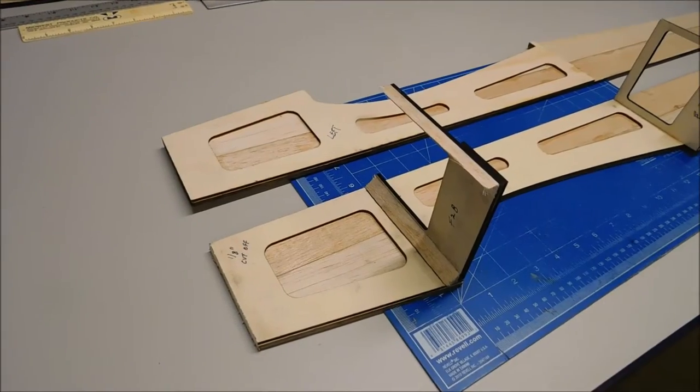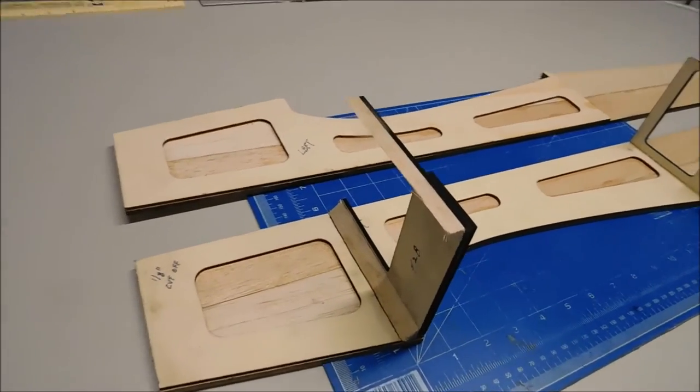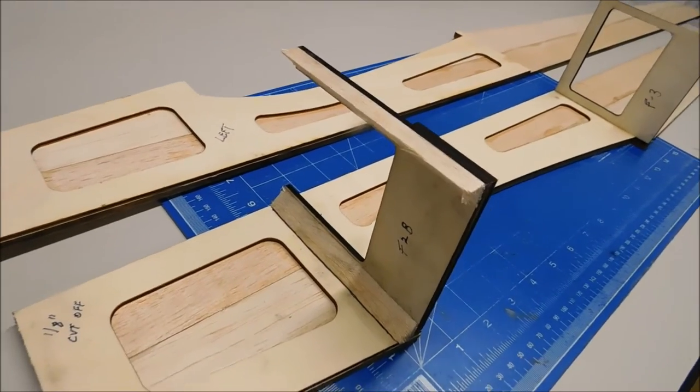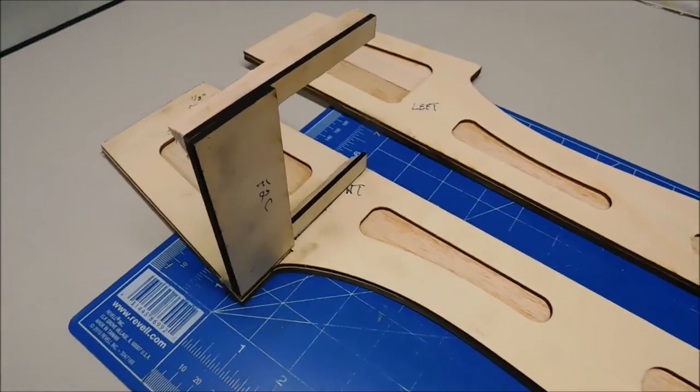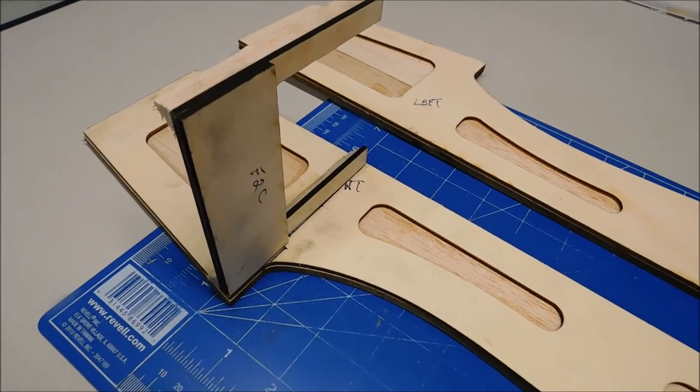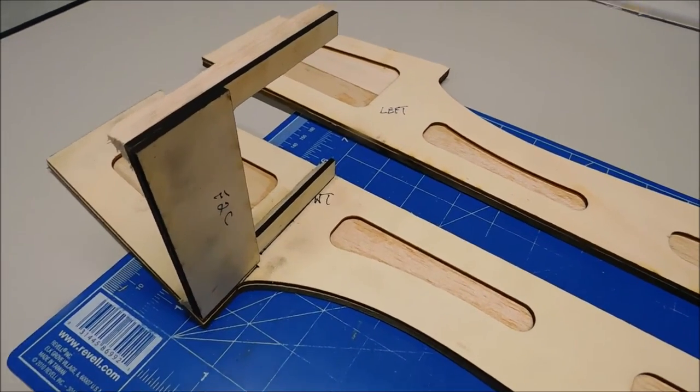I also have started framing up the fuselage. I've got the F2 former with the triangle stock already glued in place, with the additional dowel plate there for the wing dowels.